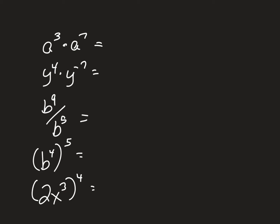This first one, they're multiplying the same base. So I'm just going to add the exponents. Three plus seven is ten. It's just a to the tenth power. Piece of cake.